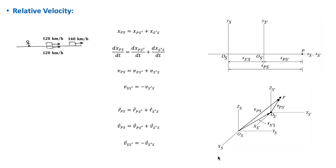Suppose that two cars are moving beside each other at the same speed of 120 kilometers per hour with respect to an observer who is stationary on earth. In this case, any of the two cars is at rest relative to the other. According to a stationary observer on earth, each car is moving at 120 km/h, and to an observer in either car, the stationary observer on earth is moving backwards at minus 120 km/h.